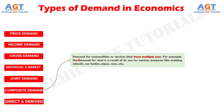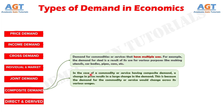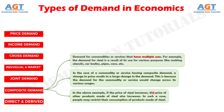Composite demand is the demand for commodities or services that have multiple uses. For example, steel is demanded for making utensils, car bodies, pipes, cans, etc. In the case of composite demand, a change in price results in a large change in demand because demand changes across all its various usages. For instance, if the price of steel increases, the price of other steel-made products also increases, and people may restrict their consumption of those products.